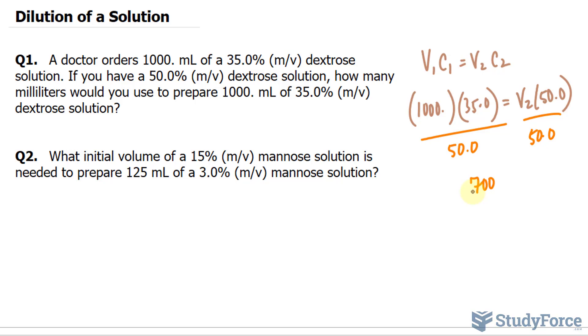We need this to three significant figures, so I'll write down 700 with a dot at the end, milliliters. Or you can write this in scientific notation as 7.00 times 10 to the power of 2 mL.